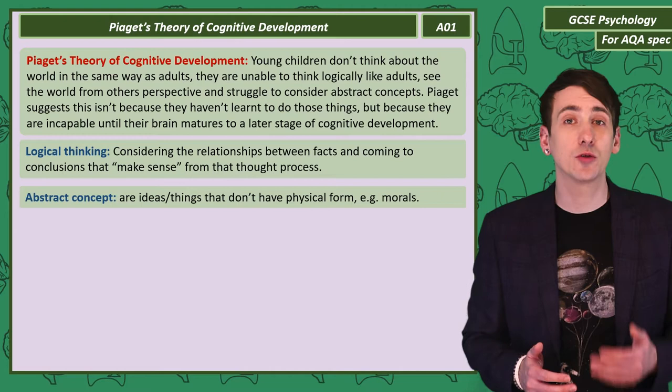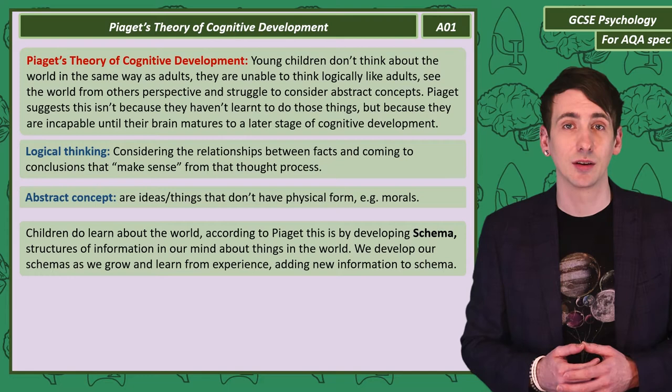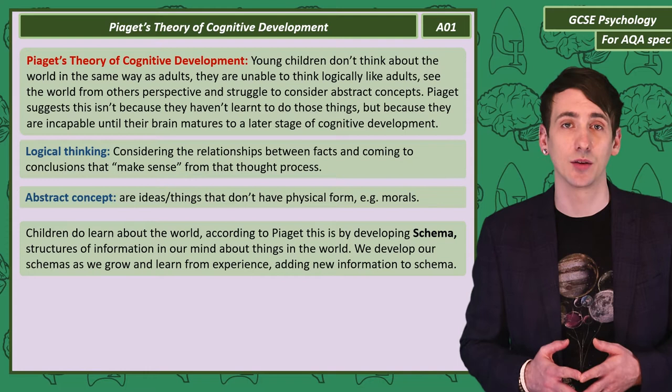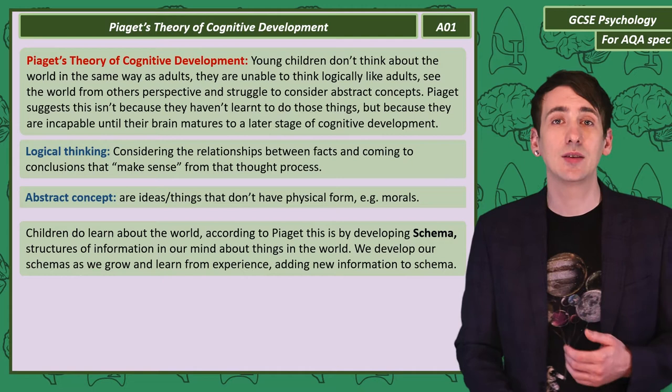As they grow, children do learn about the world, and Piaget suggests that they do this by developing schema. Schema are packages or structures of information about things in the world. We develop our schema through experience. New experiences can cause us to add to our schema, or in some cases make an entirely new schema. This leads us to two words about how Piaget thought children developed schema: assimilation and accommodation.